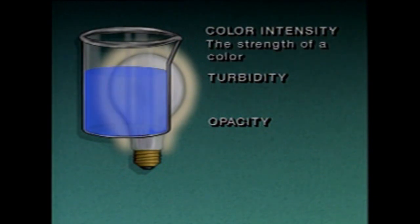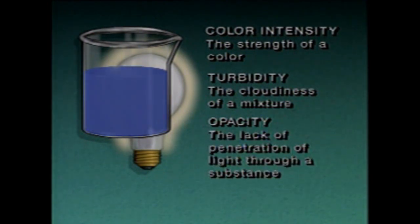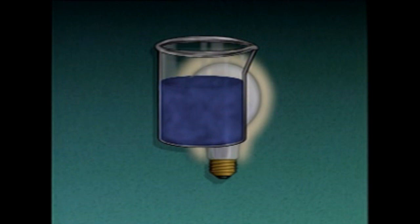Color intensity is the strength of a particular color. Turbidity is the cloudiness of a mixture. Opacity is a measure of the lack of penetration of light through a substance. Turbidity and opacity are related: as the turbidity of a mixture increases, less light is able to pass through it, so as turbidity increases, opacity increases as well.